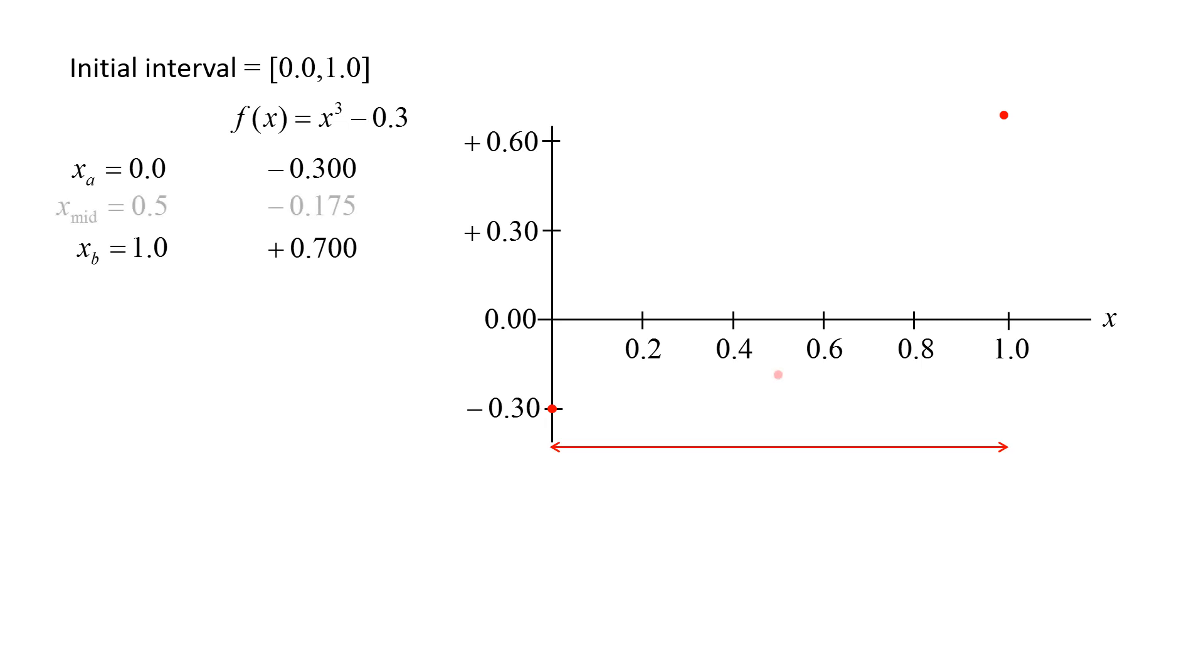Now, we calculate the value of x at the midpoint, which we will call xmid. xmid has a value of 0.5, and the function at that point is negative 0.175. Since the function does not change sign between x equals 0 and x equals 0.5, we know there is no root in that half of the interval and can discard it.